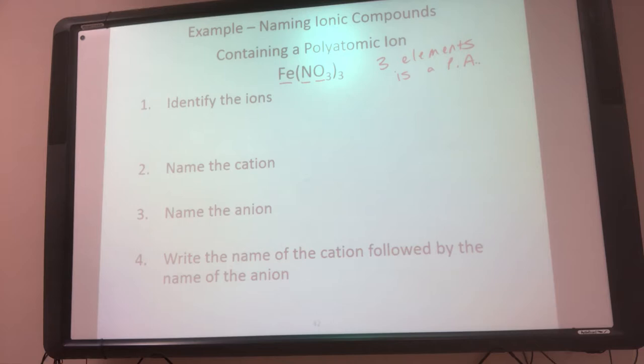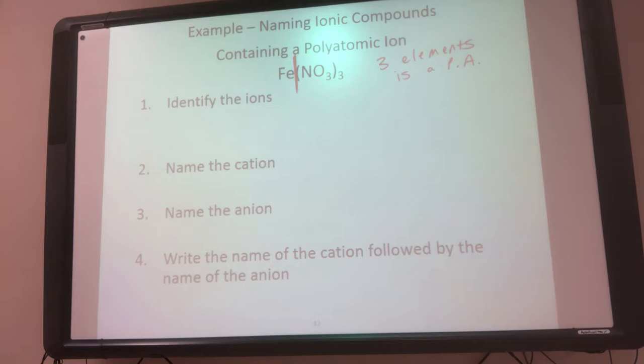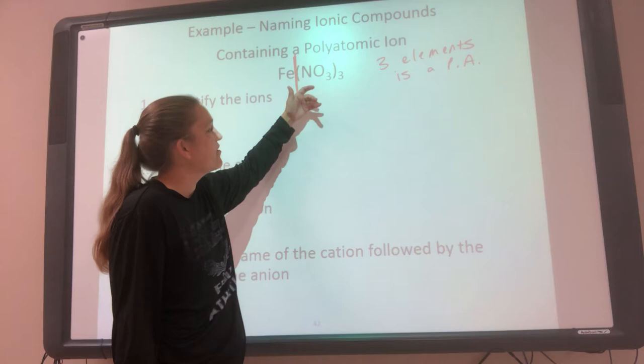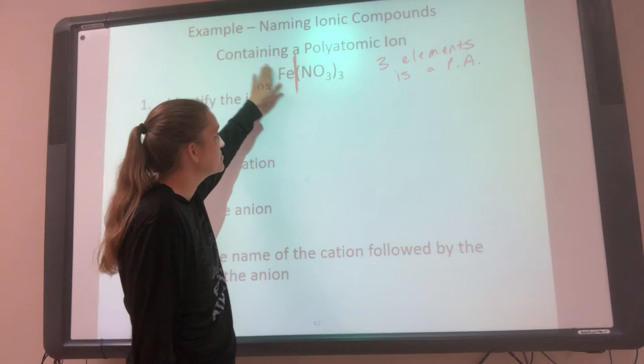So then I have to figure out where's the polyatomic ion. That means my middle element either has to go with the Fe — so Fe and N are together — or the N and the O are together. The parenthesis is actually really helpful here, so you know where the separation is. This is going to be the cation, this is going to be the anion. So now I know Fe is my cation, and NO3 is my anion.